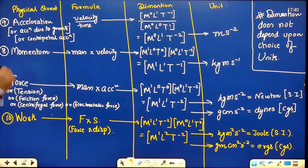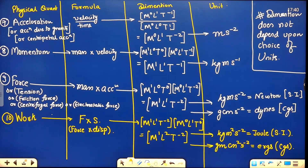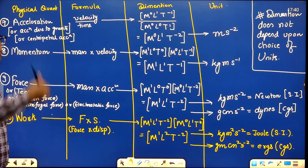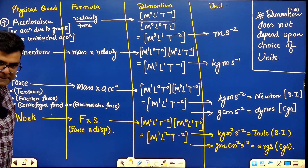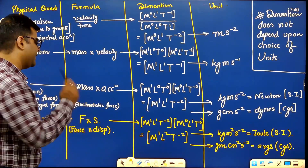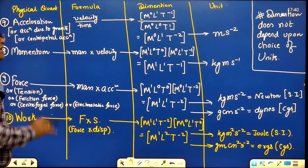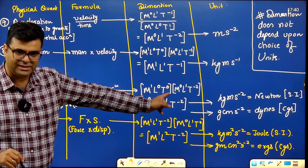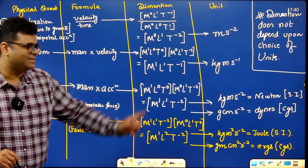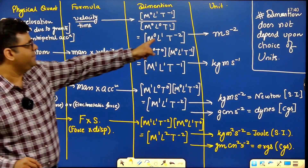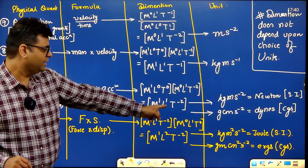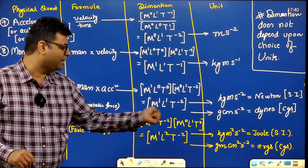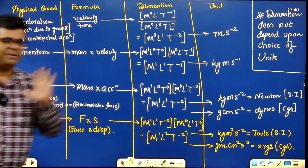Force, tension, friction force, centripetal force, centrifugal force — all are force, so all have the same dimensions. Force = mass × acceleration. Mass is M¹L⁰T⁰, acceleration is M⁰L¹T⁻². Multiply and combine: force dimensions are M¹L¹T⁻².